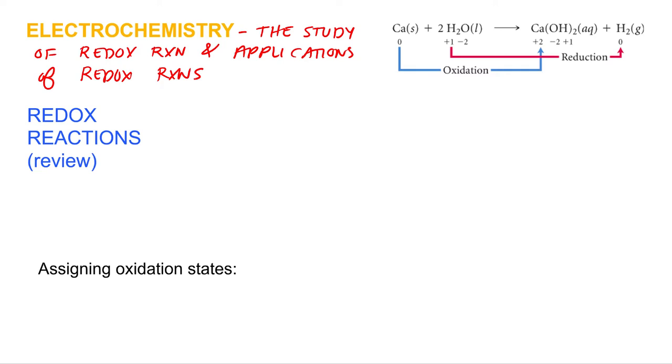So in General Chemistry 1, we introduced the concept of a redox reaction. What is a redox reaction? Oxidation reduction reaction, that's the full name. Losing what? Losing and gaining electrons.